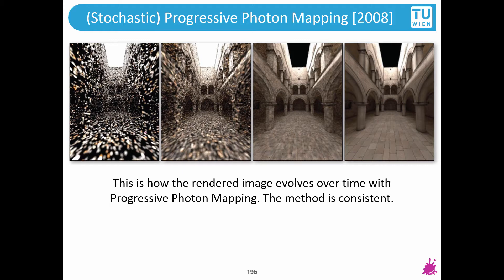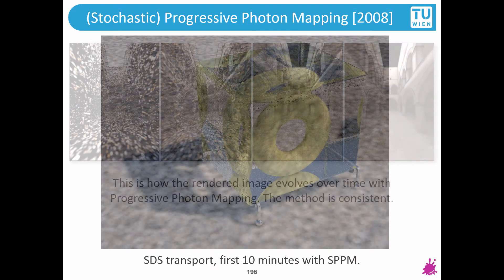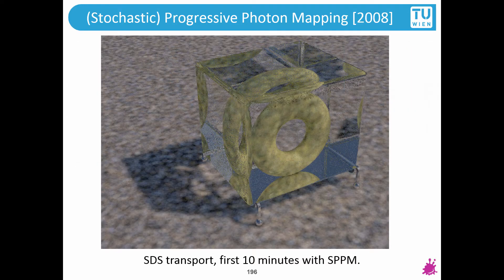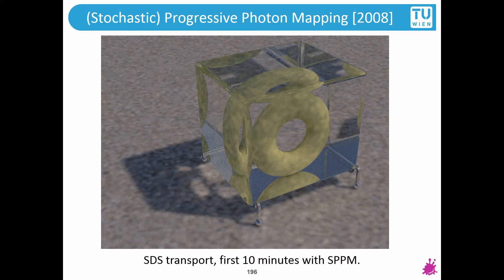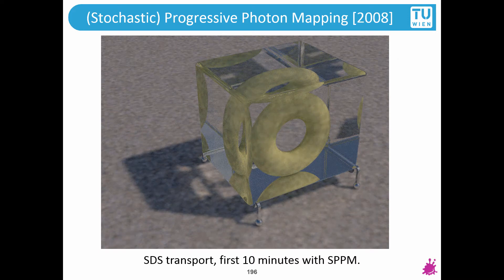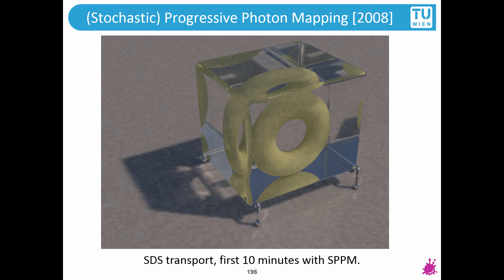Why is this useful? Because you have practically an infinite number of photons and you can see how the rendered image evolves over time with progressive photon mapping. This method is consistent — a big deal because it makes photon mapping consistent in practical cases. You can see how it converges in the first 10 minutes of rendering with SPPM on a scene with heavy SDS transport.